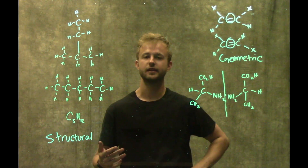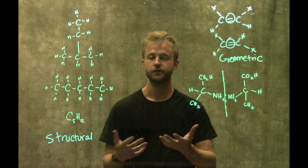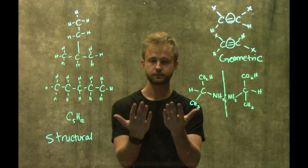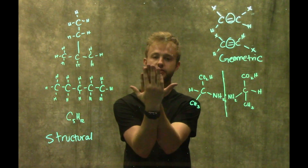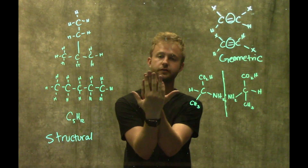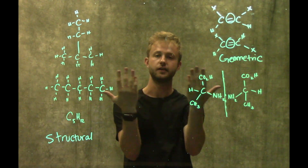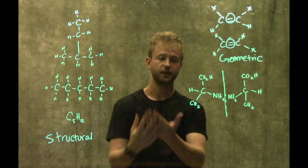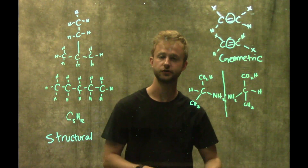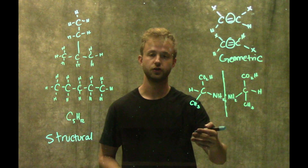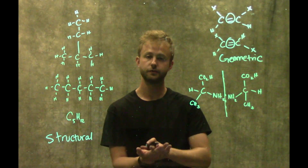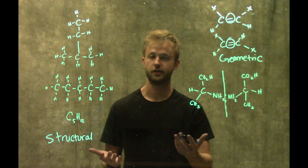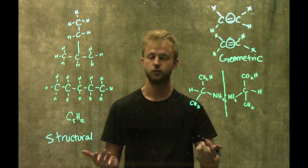A good way to visualize this is with your two hands. Your hands are mirror images of one another, and if you take your hands and put them on top of each other, they don't line up perfectly. They line up perfectly when oriented the same way, but when they're mirror images, they don't line up. That's the same thing that's happening with enantiomers. We could also say that our hands are enantiomers of one another because when we stack them, they don't line up.